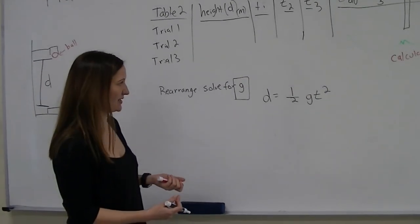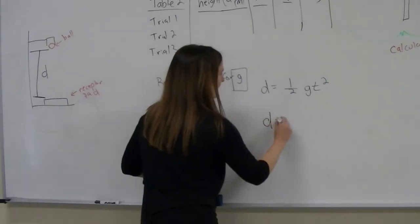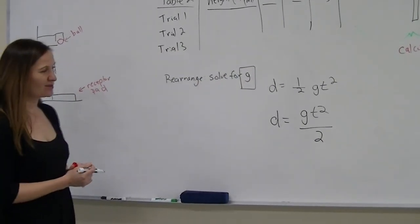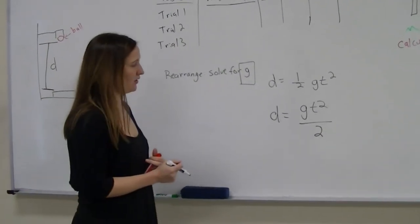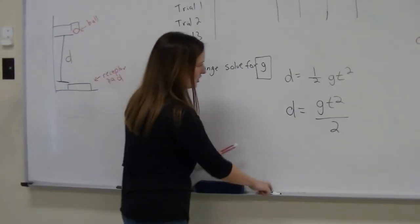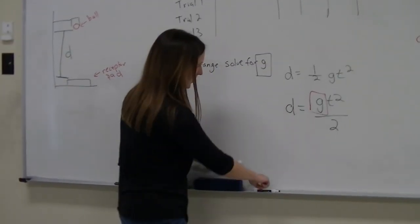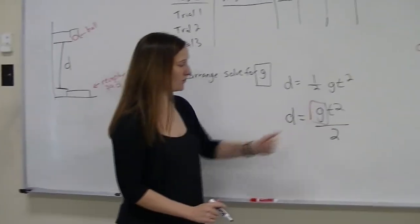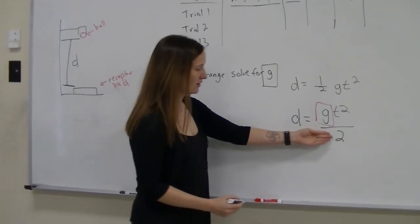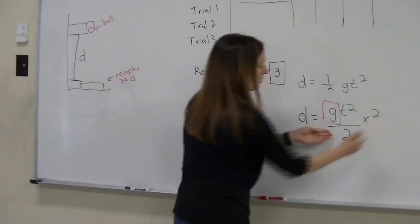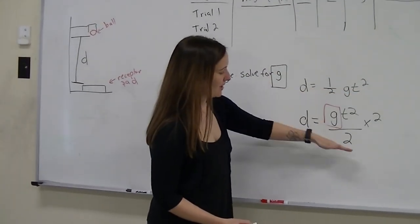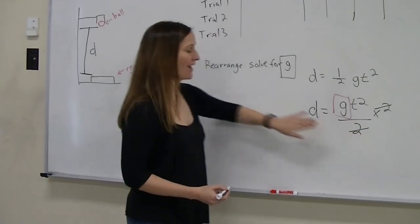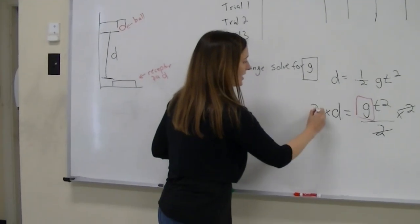I need to get G by itself. Now remember this equation is the same if I write it this way, and what that's going to do is it's going to help me rearrange it a little bit easier. So what I need to do is I need to get G by itself. I've got to get rid of the 2, and I also need to get rid of the T squared. So I'm going to start by getting rid of the 2. Since the 2 is in the denominator, I'm going to multiply this side of the equation by 2, because what I'm going to get is 2 divided by 2, and then we'll cancel. Whatever I do to one side of the equation, I have to do to the other. So I'm also going to multiply this side by 2.